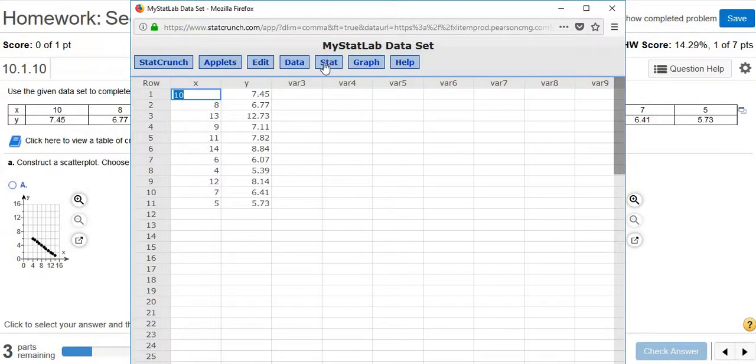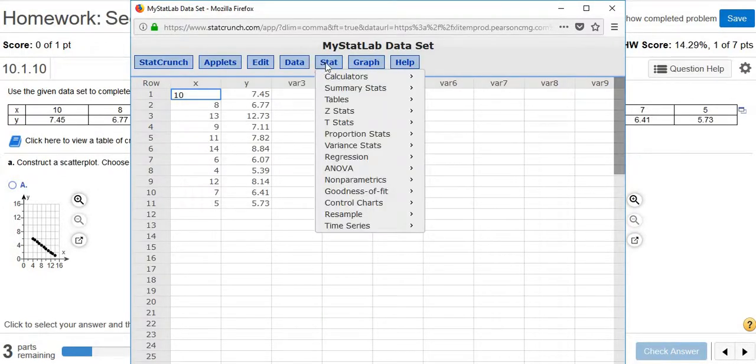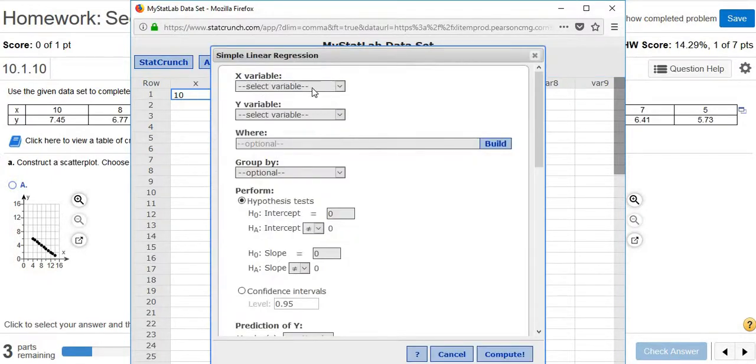Then to construct the scatter plot, we'll go to Stat, Regression, Simple Linear. Left click, then just pick the X, pick the Y, click Compute.